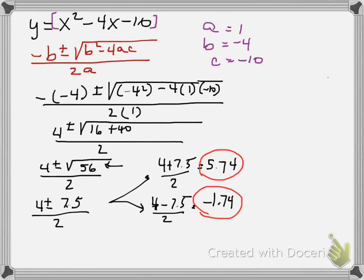If we needed to find the actual x-y pair, so if it wanted us to find the coordinate of the x-intercept, then here are the x values, and we put each one of those into the original formula for x and solve for y.